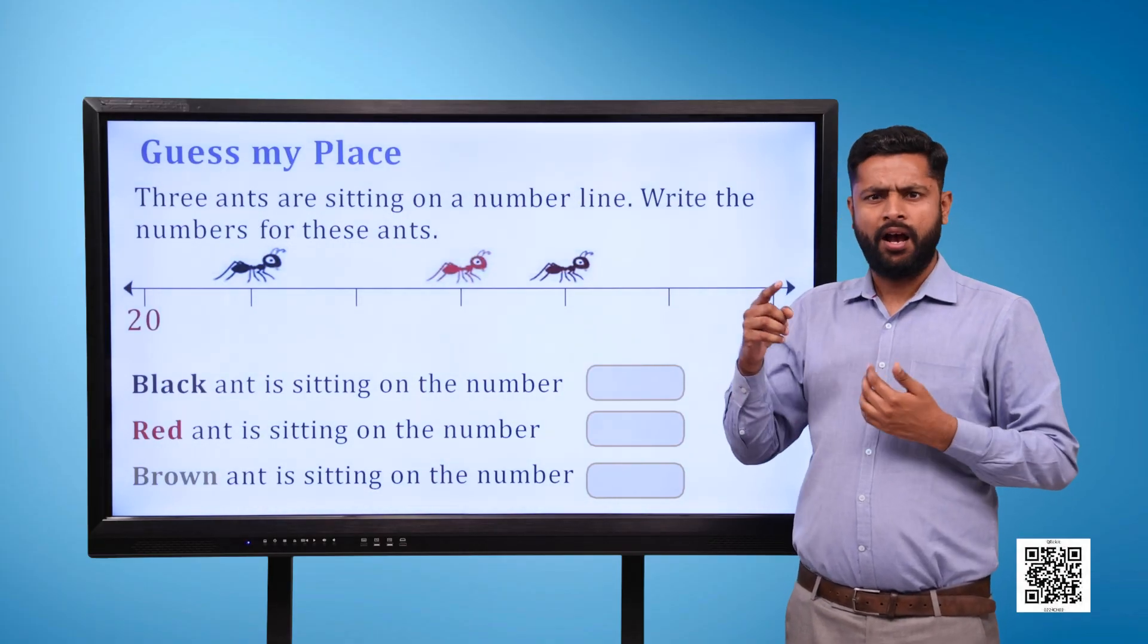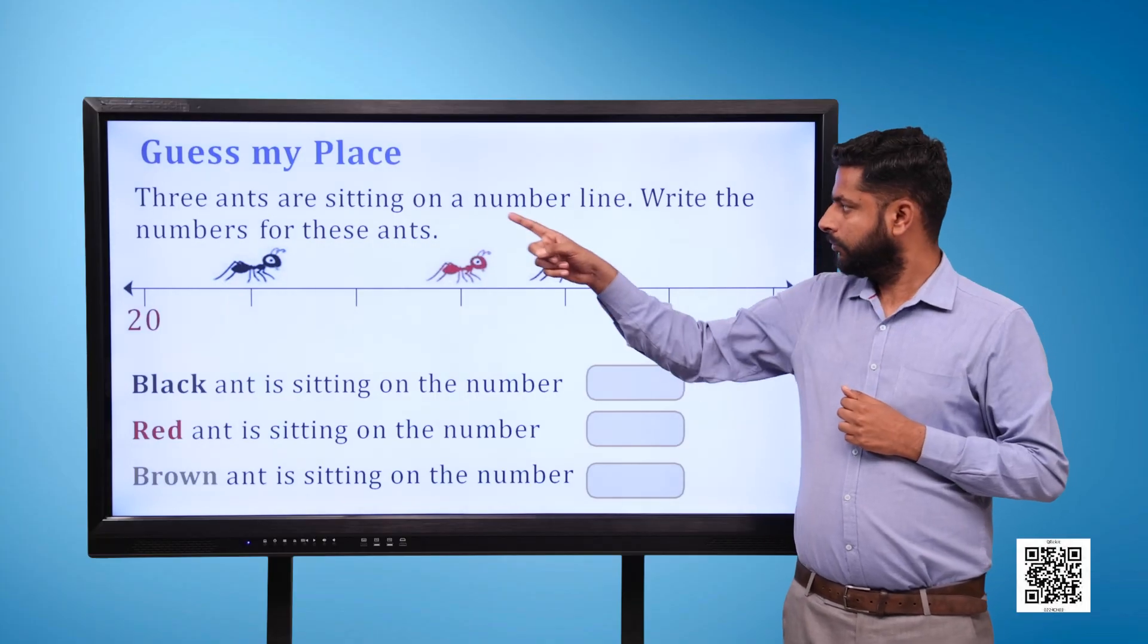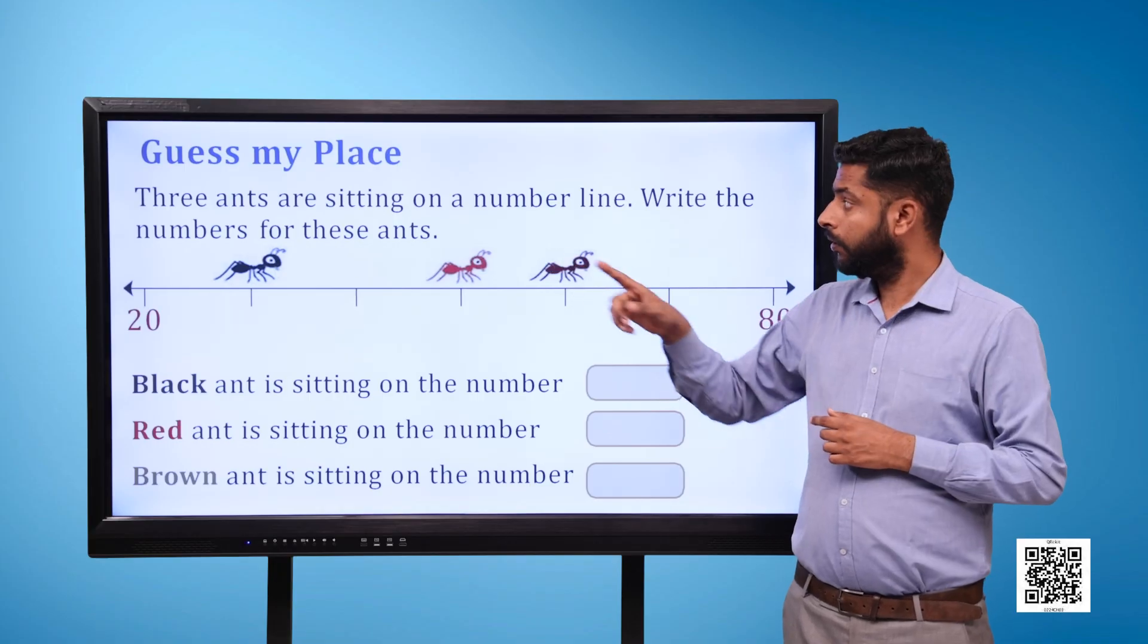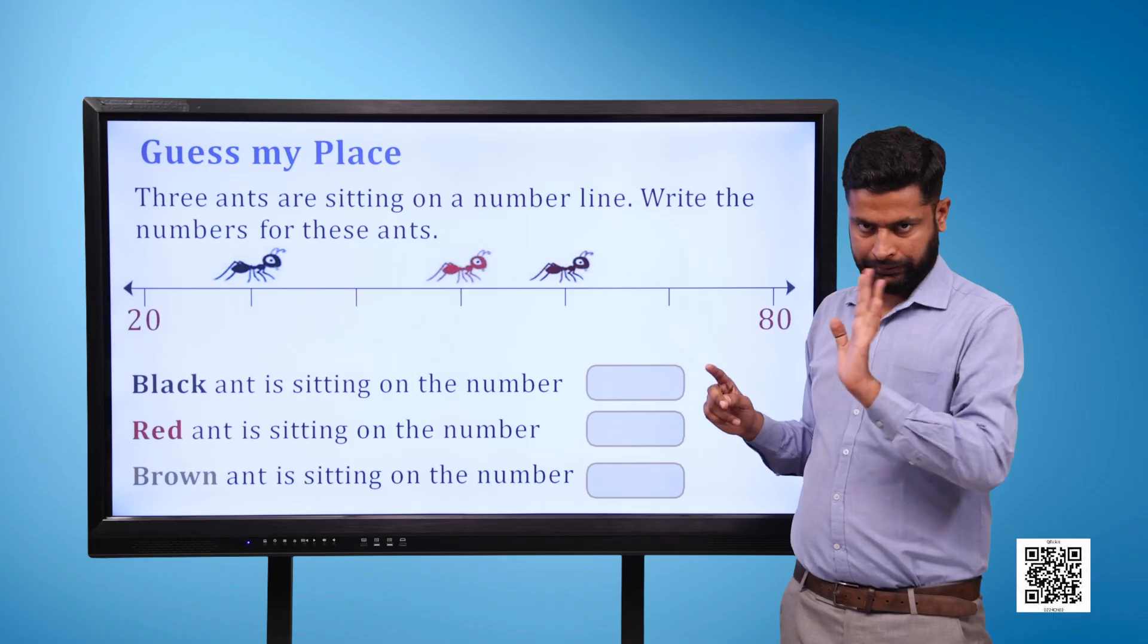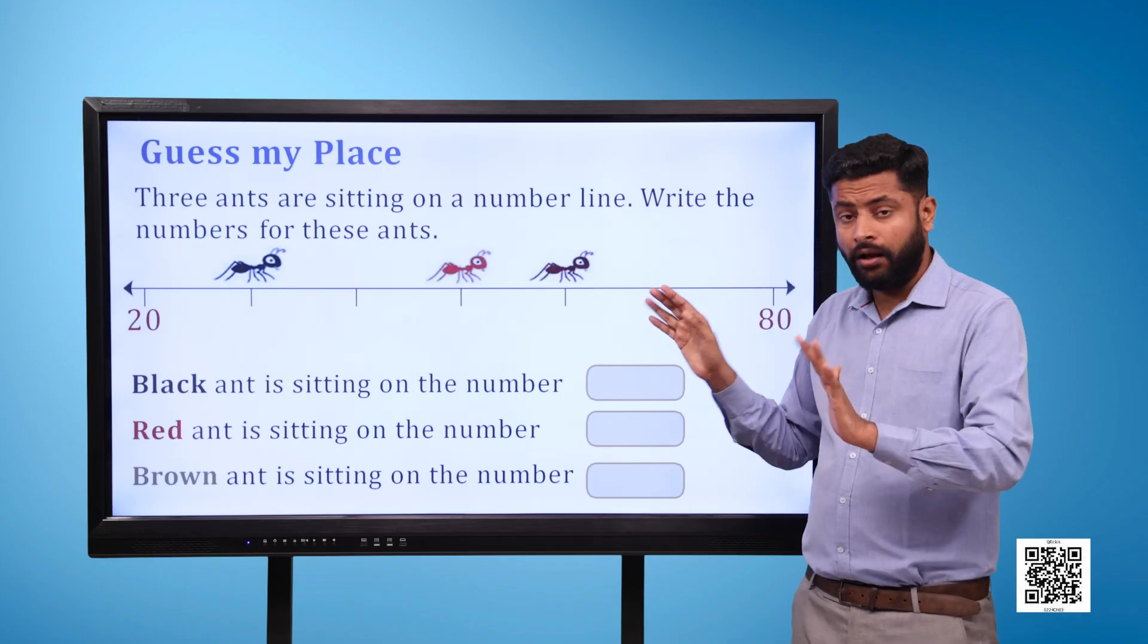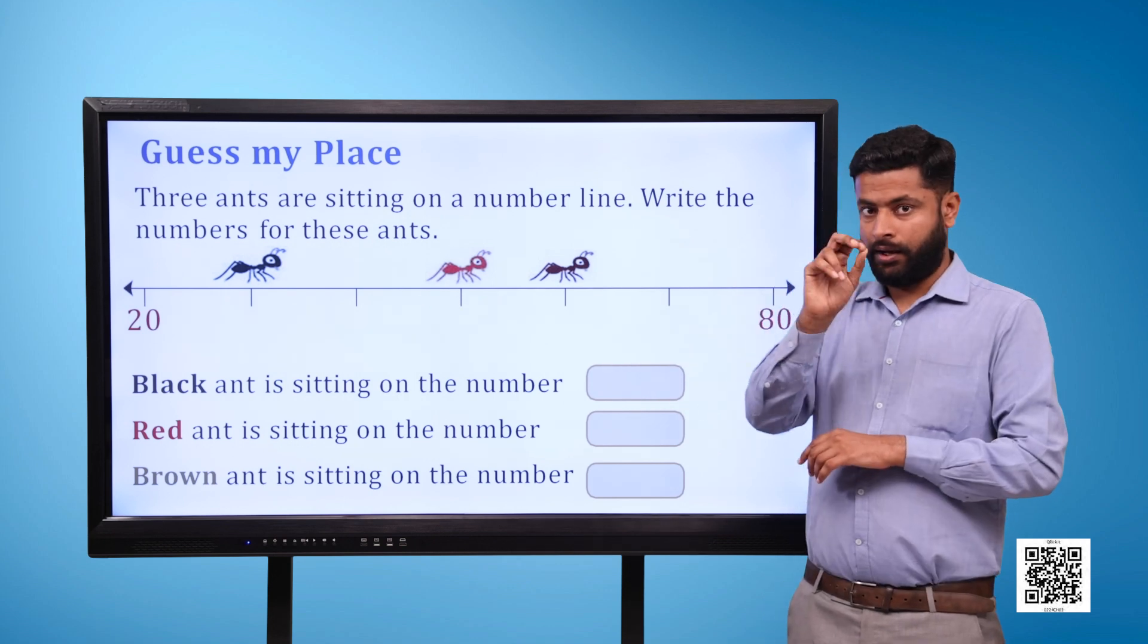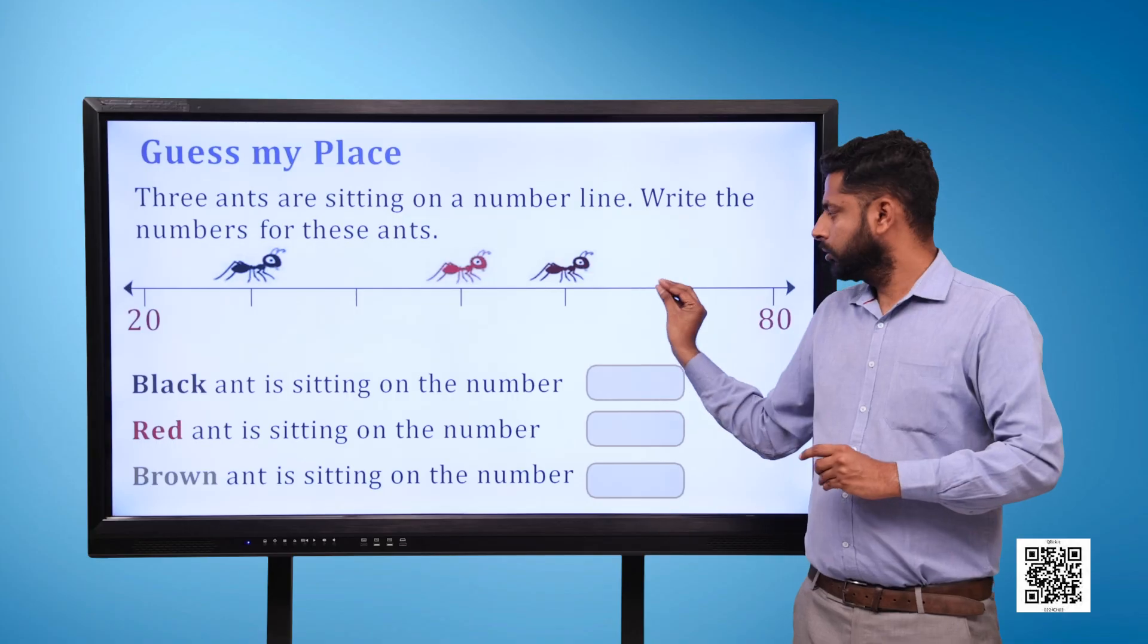Guess my place. Three ants are sitting on a number line. Write the numbers for these ants. Here is a number line. On extreme left, the number written is 20 and on extreme right, the number written is 80. In between, there are five points on the number line.